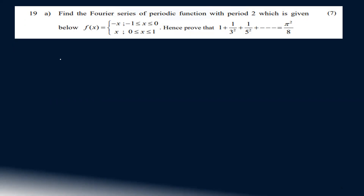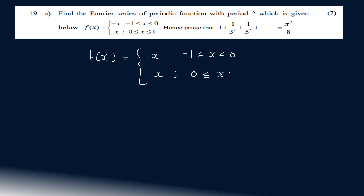Find the Fourier series of the periodic function given below: f of x equals minus x for minus 1 less than or equal to x less than or equal to 0, and x for 0 less than or equal to x less than or equal to 1. Hence prove that 1 plus 1 by 3 squared plus 1 by 5 squared and so on equals pi squared by 8.